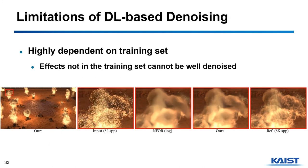Before wrapping up, I would like to point out one of the limitations of deep learning-based methods. Deep learning-based methods highly depend on the training set, and deep learning-based denoisers cannot fully denoise visual effects that were not used for training. This figure shows one example of this limitation — a particular flame-like effect not used for training. The result using deep learning-based methods is similar to the traditional one, and both show poor quality.